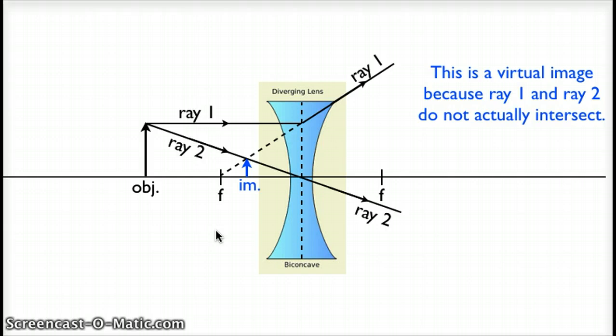This is our complete ray diagram. For a diverging lens, we are only going to draw two principal rays. And the intersection between those two rays will tell us where our image is formed.